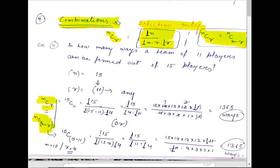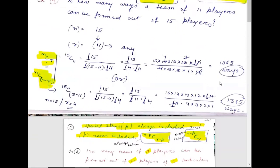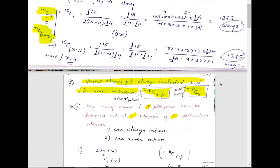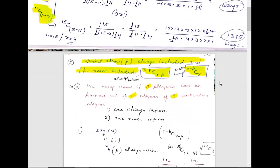Similarly, we can use the alternative formula: nCr equals nC(n minus r). With n equal to 15 and r equal to 11, this gives 15C(15 minus 11), which is 15C4. That equals factorial 15 divided by factorial 11 into factorial 4. We get the same answer — 1365 ways.